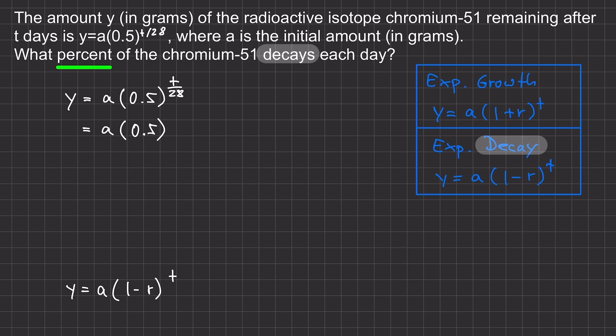We can write t over 28 as t times 1 over 28, right? Recall that we can write this with the power of power rule for exponents as 0.5 raised to the power of 1 over 28 raised to the power of t.